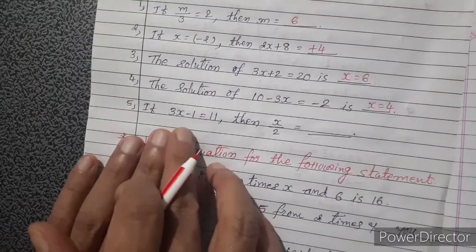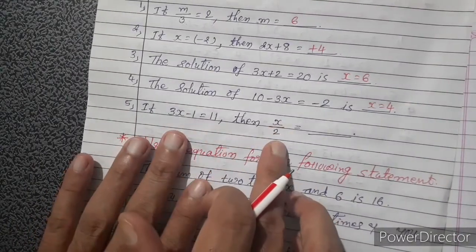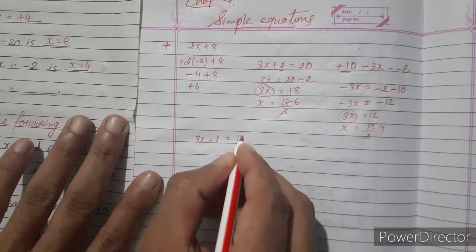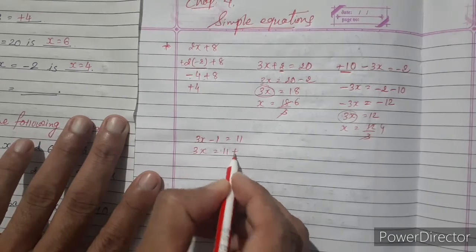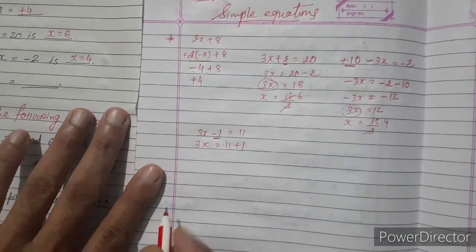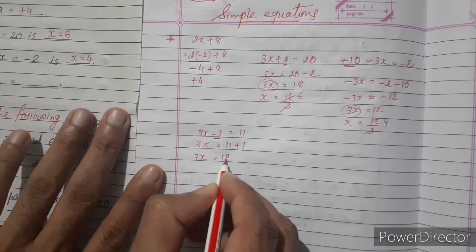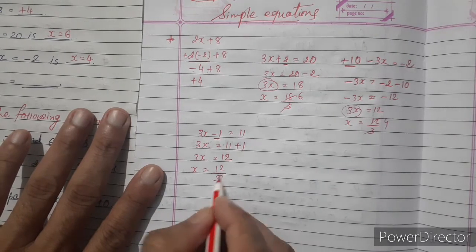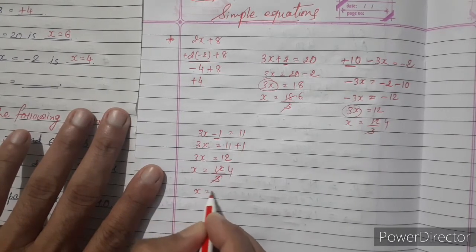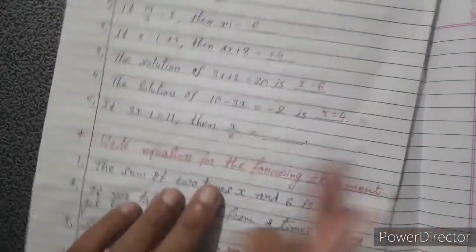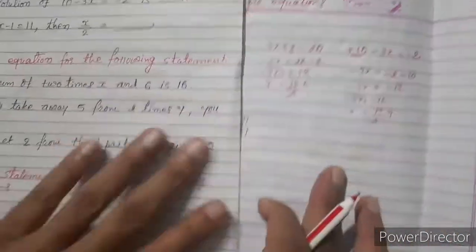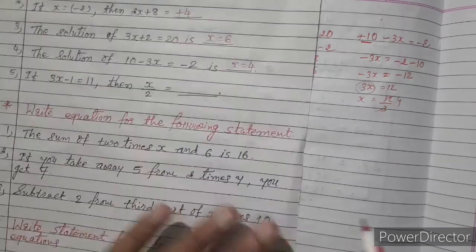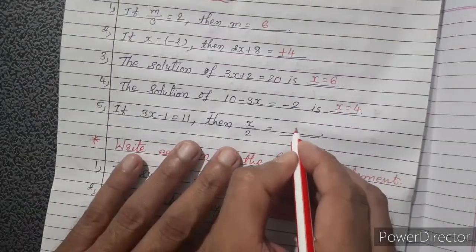If 3x minus 1 equals 11, then what is x divided by 2? We solve: 3x equals 11 plus 1, so 3x equals 12, meaning x equals 12 divided by 3, so x equals 4. But the question asks for x divided by 2, which equals 4 divided by 2, giving x divided by 2 equals 2.